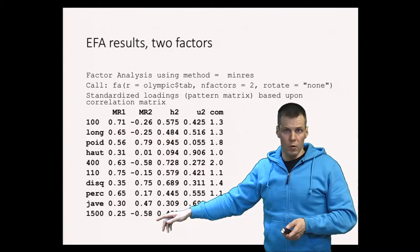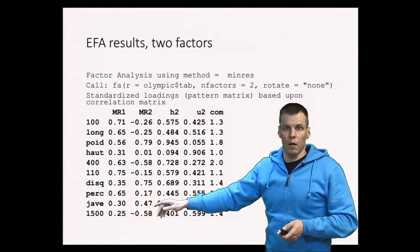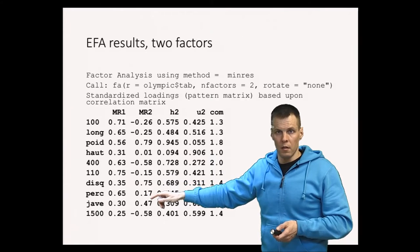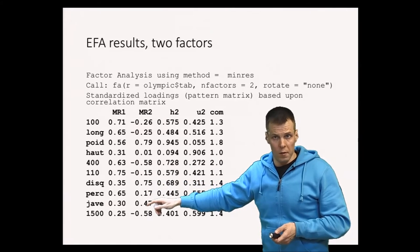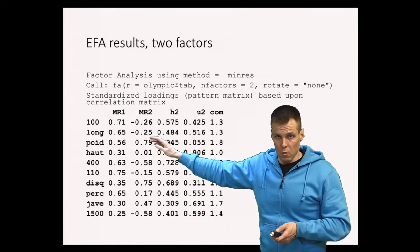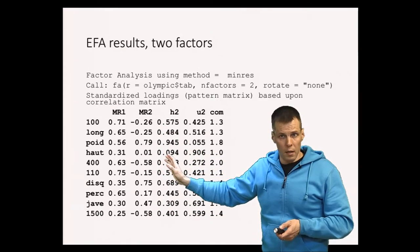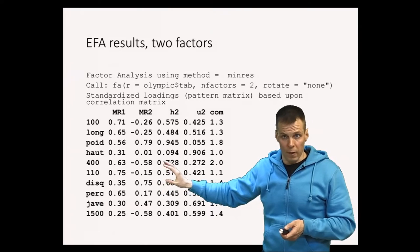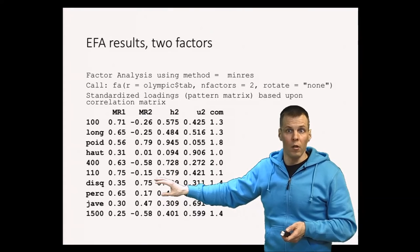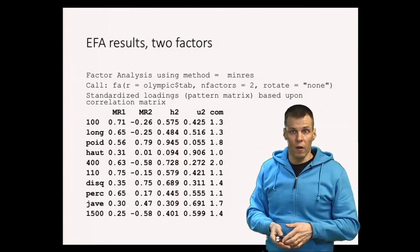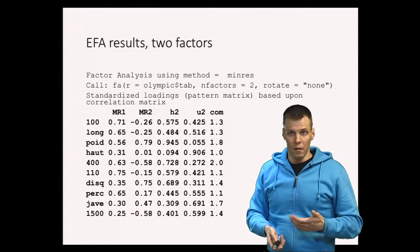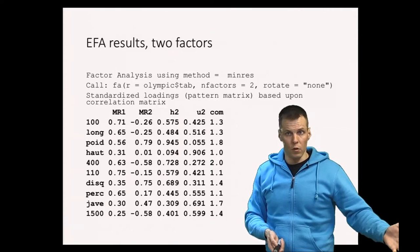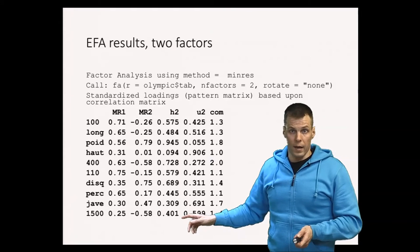The second factor shows that shot put, javelin, and discus are positively associated, while the 1500 meter run and other running sports are negatively associated. So the second factor quantifies whether a person is better at sports that require strength versus sports that require running speed. There is a trade-off: if you are a very bulky person, you are good at strength sports, but having more mass means you are not as great at running sports. This second factor quantifies that trade-off.